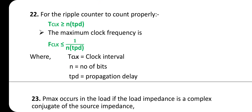For a ripple counter to count properly: T_clock ≥ n × t_pd. The maximum clock frequency: f_clock ≤ 1 / (n × t_pd), where T_clock is the clock interval, n is the number of bits, and t_pd is the propagation delay.